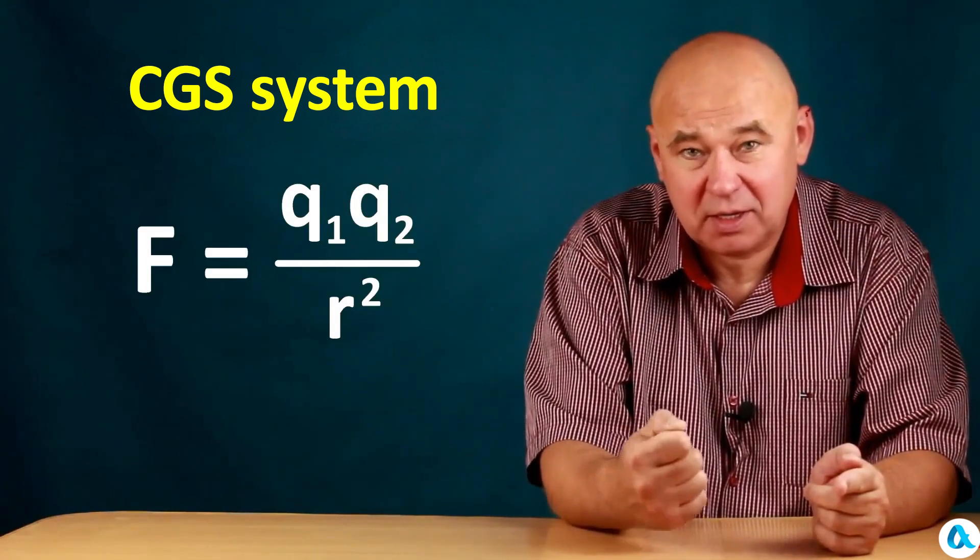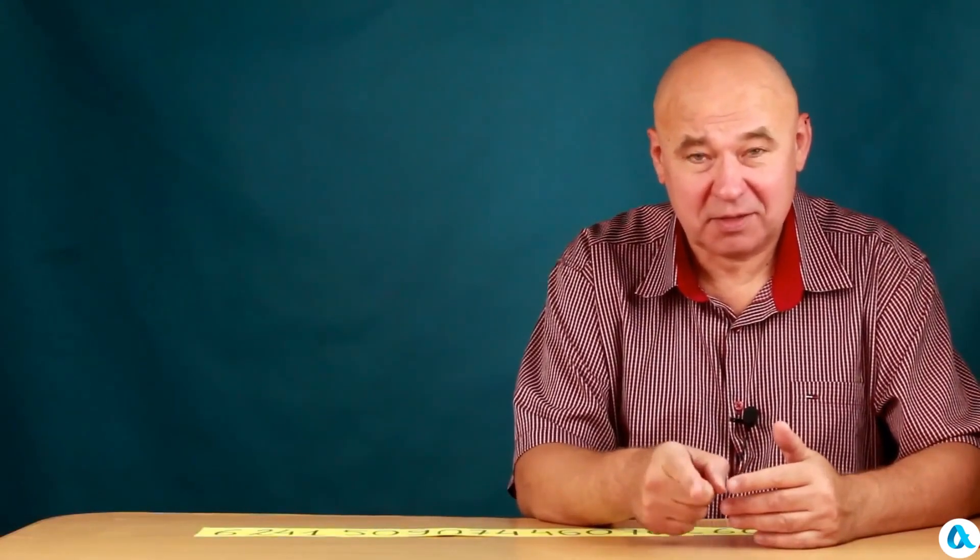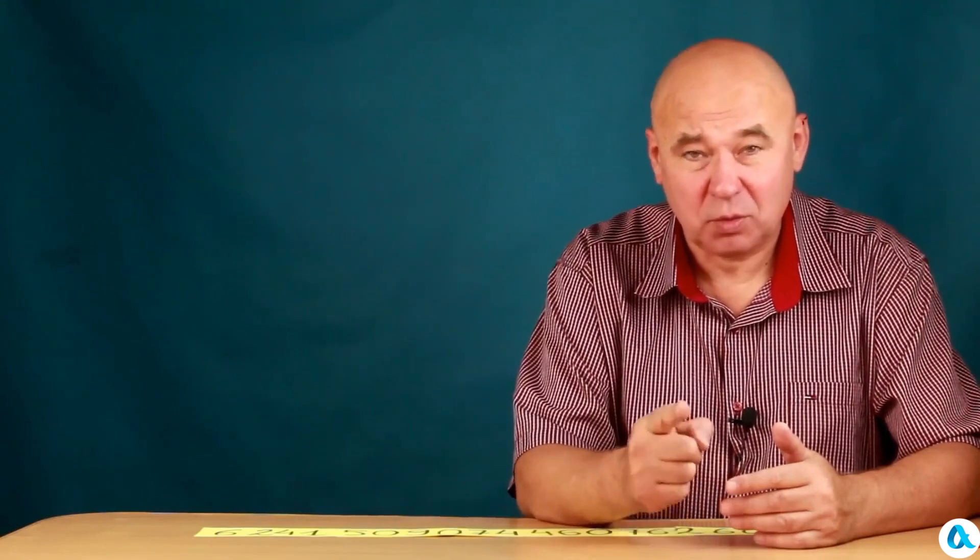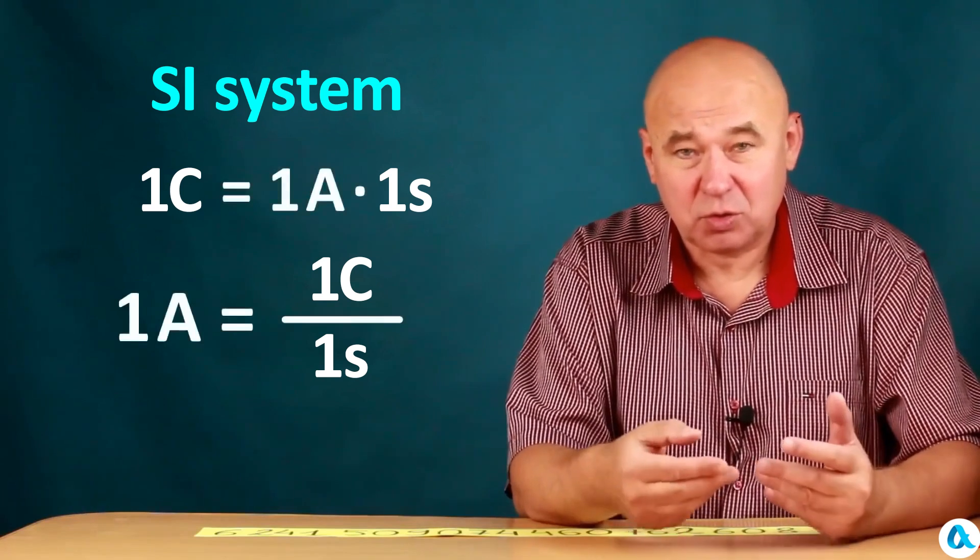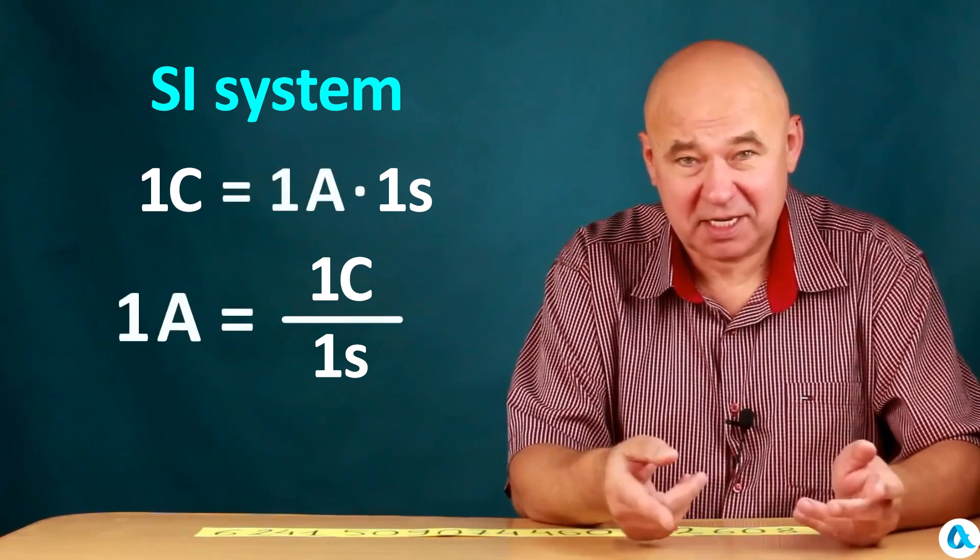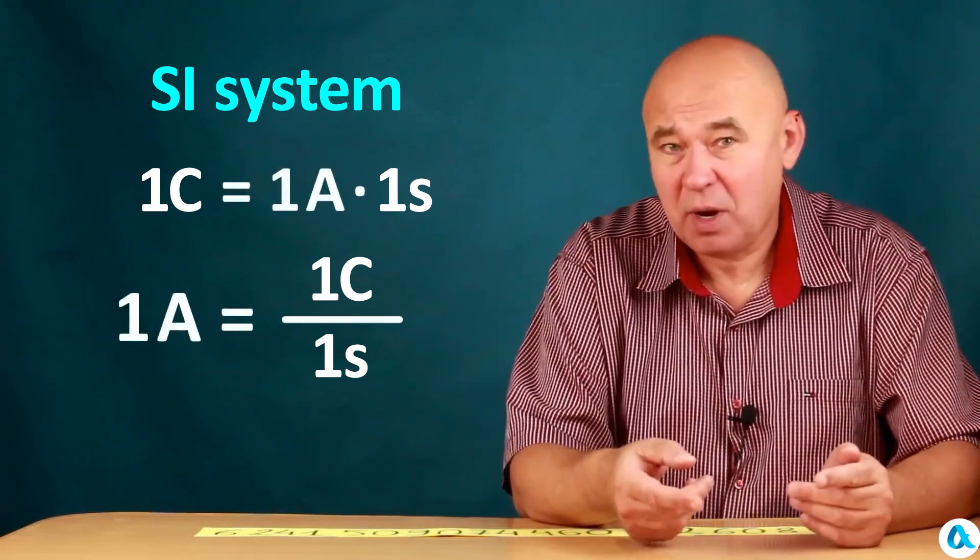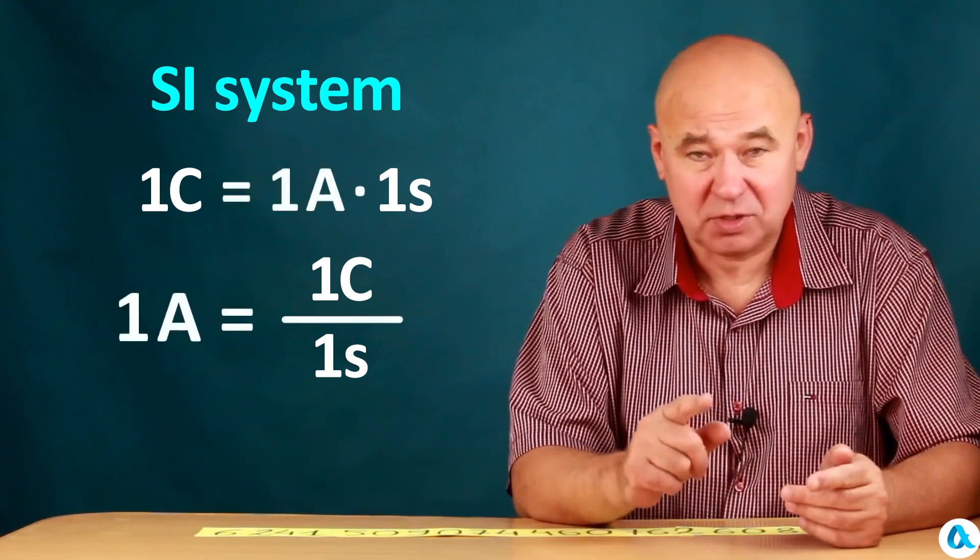In the SI system, a unit charge of one coulomb is defined through the unit of current, one ampere. And a coulomb is such a charge that flows through the cross-section of a conductor in one second, when a current of one ampere flows through this conductor.